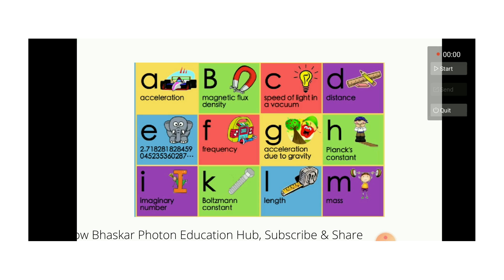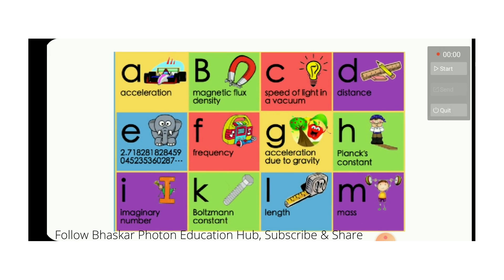So A is acceleration — that is a small letter. B is the magnetic flux density — B here is a big capital letter. C is the speed of light in a vacuum. C is the speed of light in a vacuum.